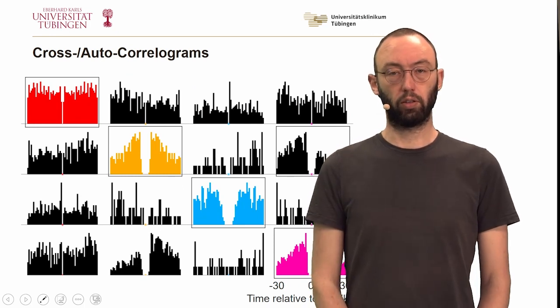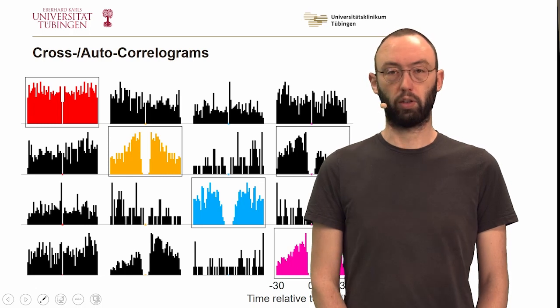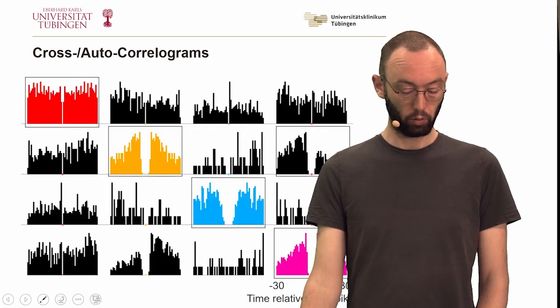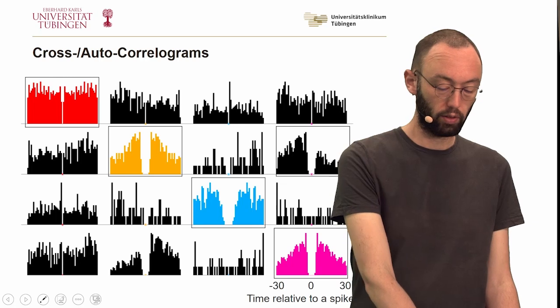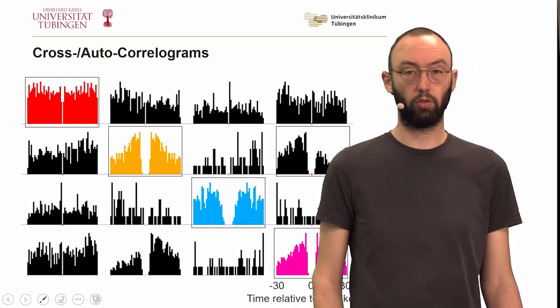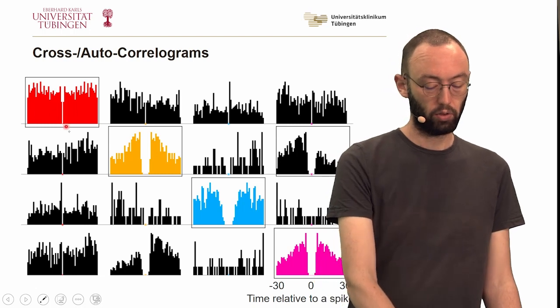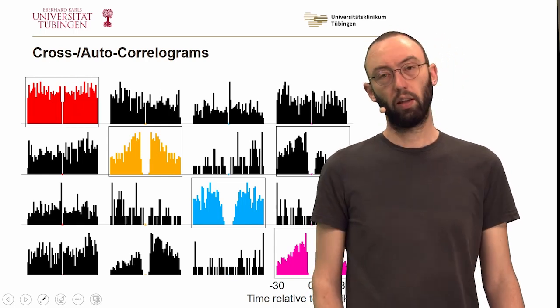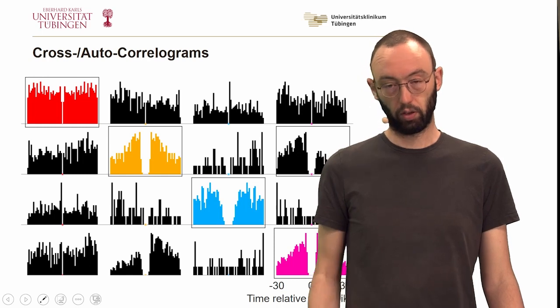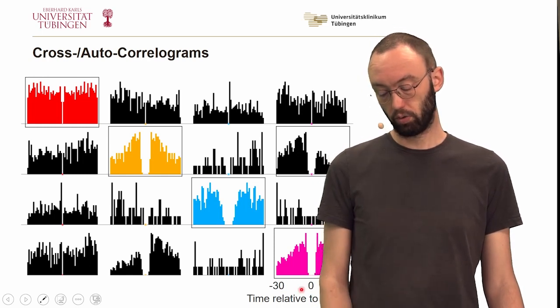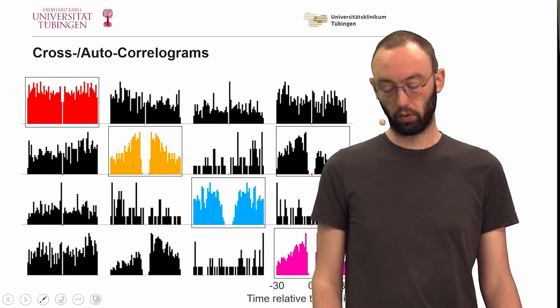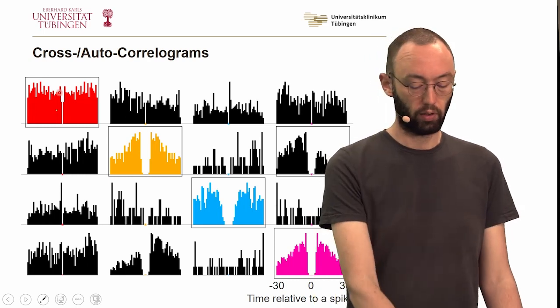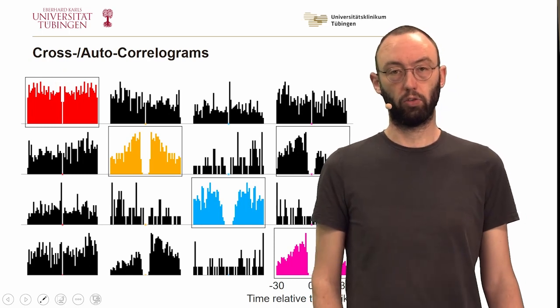Let's look at the cross- and auto-correlograms of our clusters, or at least of a subset of the clusters. What are features that are important to note here? First, this red cluster. The red cluster has an auto-correlogram which is relatively flat and also doesn't show a proper pause in the middle. A pause here in the middle would be a signature that the refractory period is observed. Note the time scale - this is now zoomed in from minus 30 to 30 milliseconds. So a refractory period should be at least on the order of plus minus a couple of milliseconds. But there is nothing to indicate that this red cluster here has such a refractory period.